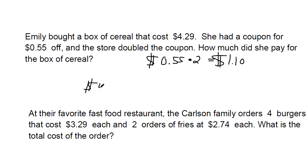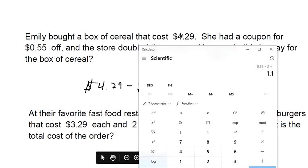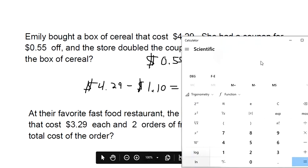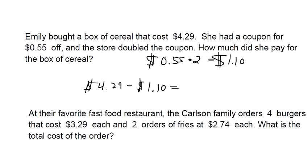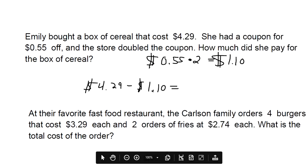So Emily is going to get to buy it for $4.29 less the $1.10 that we get because the store doubled the coupon. So $4.29 subtracted by $1.10, that's $3.19.